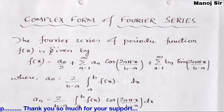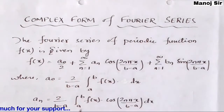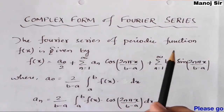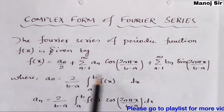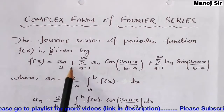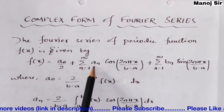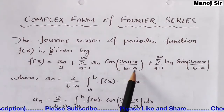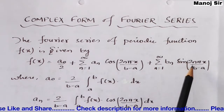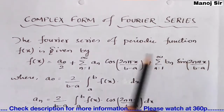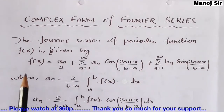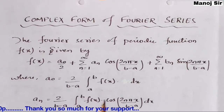Let us start with the new topic: the complex form of a Fourier series. The Fourier series of any periodic function f(x) is given by: f(x) = a₀/2 + summation from n=1 to infinity of aₙ cos(2nπx / (b−a)) + summation from n=1 to infinity of bₙ sin(2nπx / (b−a)). This is the general formula for the Fourier series of any periodic function f(x).